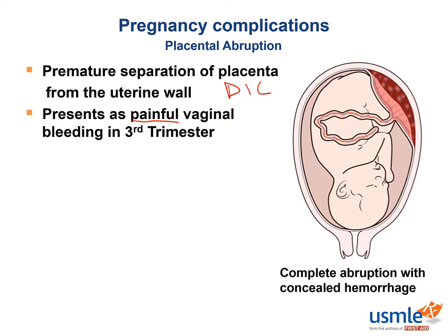Let's take a minute to quickly review why DIC is such an important risk in pregnancy. Disseminated intravascular coagulation is the widespread activation of clotting factors. This leads to an eventual deficiency in all of the clotting factor proteins and the patient is in a bleeding-prone state, as evidenced by low platelet count and elevated bleeding time, PT, and PTT.